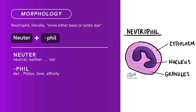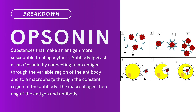Compound: neuter plus fill. Neuter means neutral — neither one nor the other. Fill is derived from phyllis, meaning love or attraction. There you have it — compound term neutrophil.